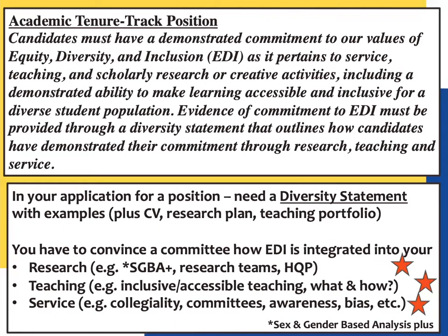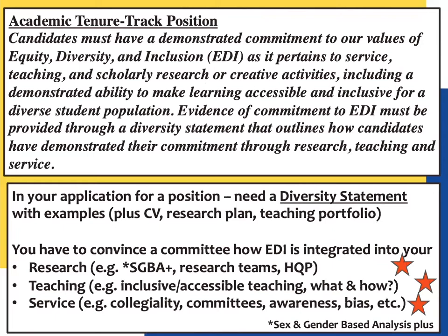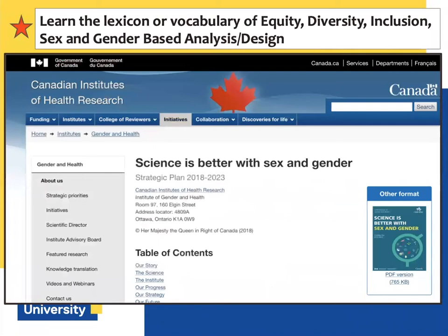It's the job of organizations like GlycoNet to provide this kind of training, because people of my generation never got trained in these things. NSERC says: show us how you are integrating EDI into your application, particularly in your training design. CIHR has now made sex and gender-based analysis considerations mandatory — you must be able to include those in your experimental design. SGBA+ is mandatory for CIHR; EDI in HQP is a bonus for NSERC but will likely become mandatory. These are core competencies you must have in order to write your grants.